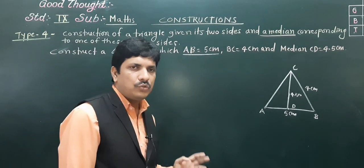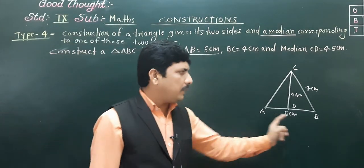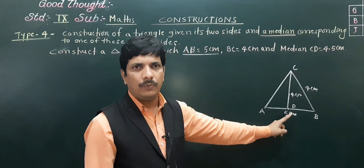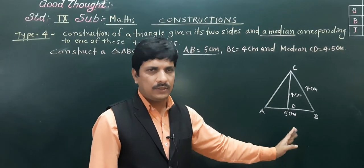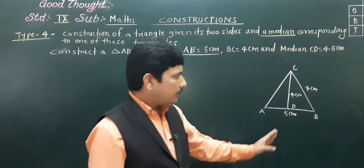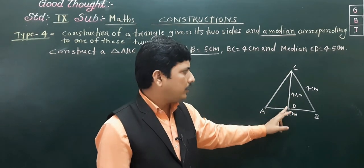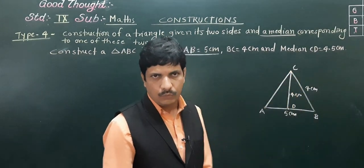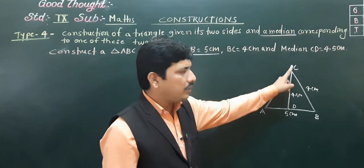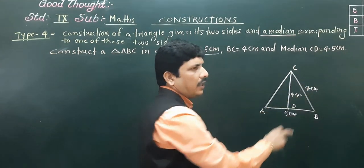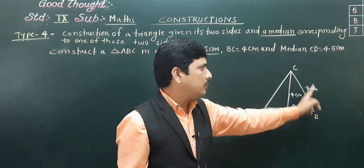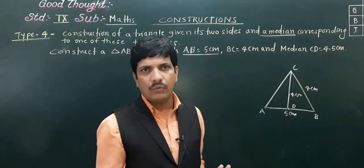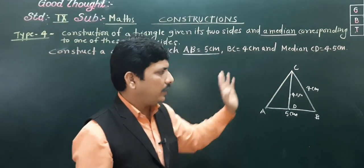To start this construction, we take AB equal to 5 centimeter. Then we find the midpoint of AB, which is D — we can find it easily by bisection. Then for BC, we take 4 centimeter distance and mark an arc from B. From D, we take 4.5 centimeter and mark another arc. Both arcs from BC and DC will intersect somewhere, and that intersection is our required point C. After that, we join to points A and B.